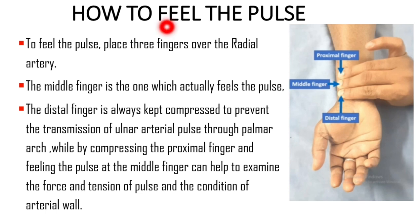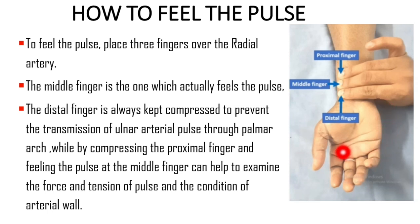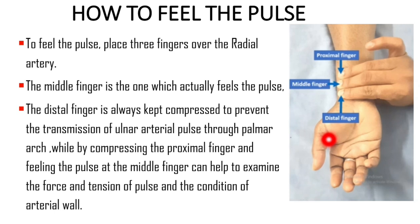Now let us learn how to feel the radial pulse. You see the image on the right side of the slide. As you can see, the examiner has placed his three fingers over the lateral aspect of the distal forearm of the subject. We have also neatly labeled the three fingers — the proximal finger, the middle finger, and the distal finger. The finger situated proximally in the lateral aspect of the forearm is called the proximal finger.